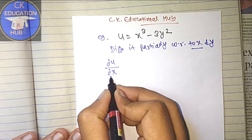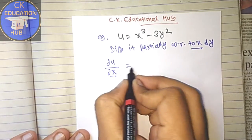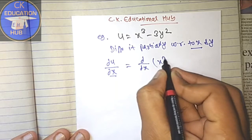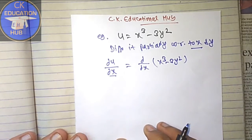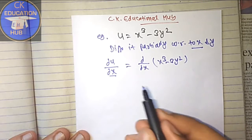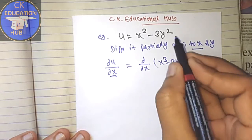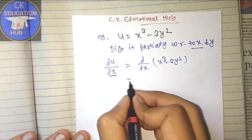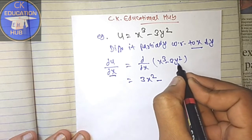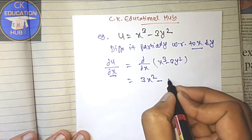del u / del x means we are differentiating this function with respect to x. For u = x³ - 3y², we have to keep in mind when we differentiate any function partially, we consider x as the variable and y as a constant. So the derivative of x³ is 3x², and the derivative of -3y² with respect to x is 0.